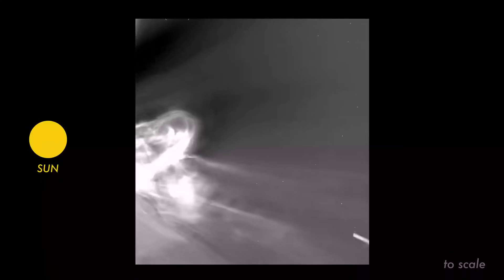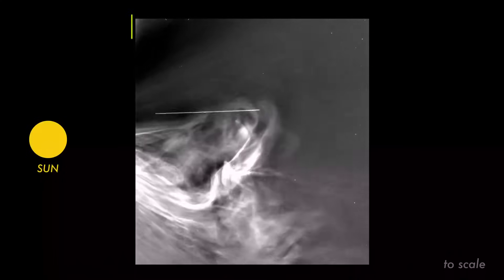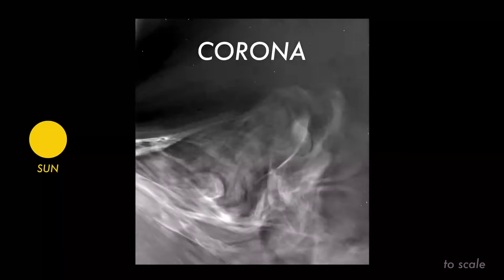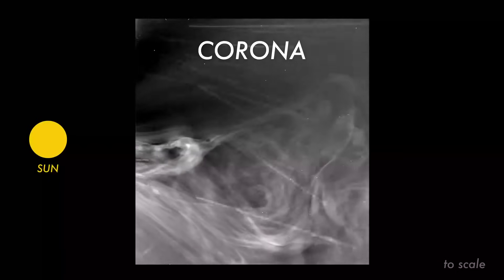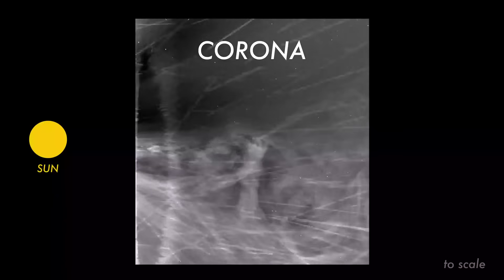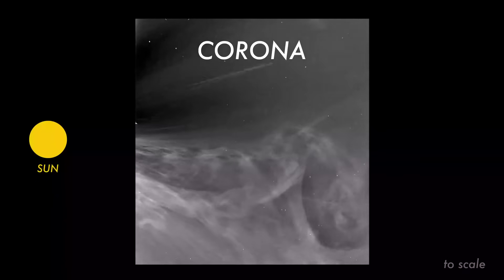At that distance, the spacecraft was immersed in the solar atmosphere known as the corona. Here, streams of electrically charged particles float outward from the sun at over a million miles per hour, forming the solar wind that fills the entire solar system.